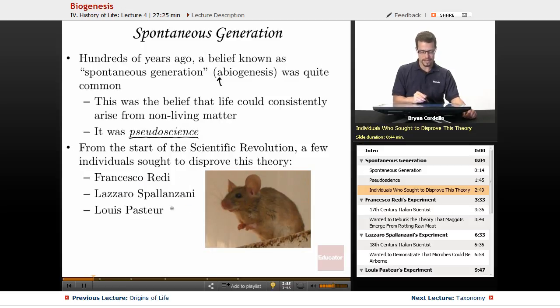Francesco Redi, Lazzaro Spallanzani, and Louis Pasteur. The amazing thing about these three gentlemen is they lived approximately 100 years apart. Francesco Redi from the 1620s to 1690s, Spallanzani from the 1720s to 1790s, and Louis Pasteur from the 1820s to 1890s. So not exactly 100 years apart, but pretty darn close. And it was this nice progression of getting closer and closer to disproving spontaneous generation. Finally, it was Louis Pasteur that put the nail in the coffin in terms of laying spontaneous generation to rest.